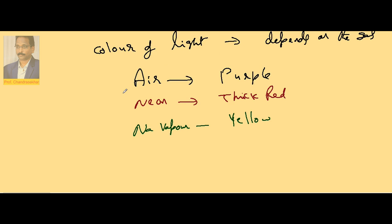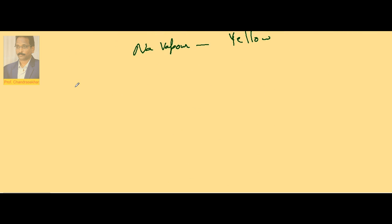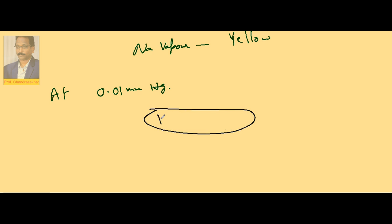If you slowly decrease the pressure further from 5 mm Hg, one can notice the stable discharge shifts toward the anode, separating from the cathode and moving toward the anode. At a pressure of 0.01 mm Hg, there is no visible discharge inside — a complete dark space is present. This dark space is called Crookes dark space.